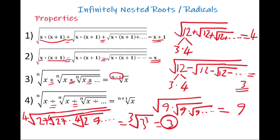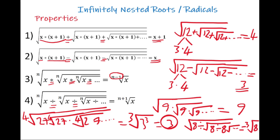For the fourth case, square root of 8 divided by square root of 8 divided by square root of 8 going to infinity: because there is a division between the roots, we increase the degree by 1, giving the third root of 8. Since 8 is 2 cubed, the third root of 2 cubed equals 2.